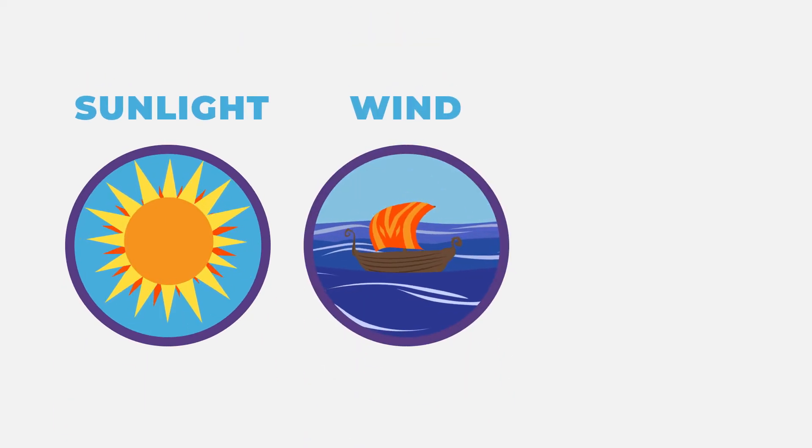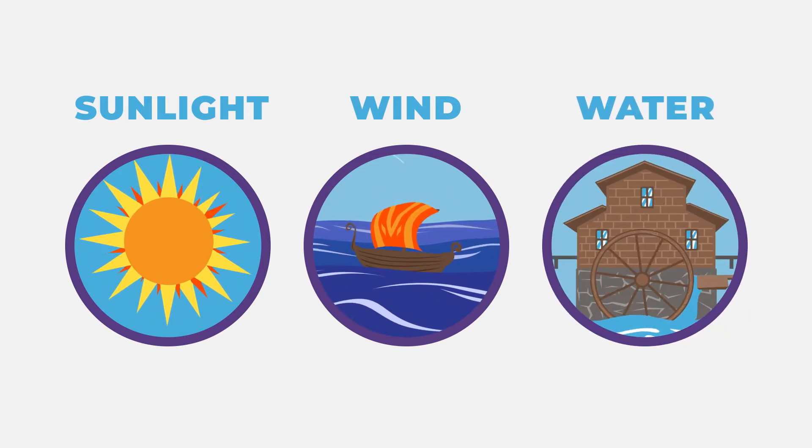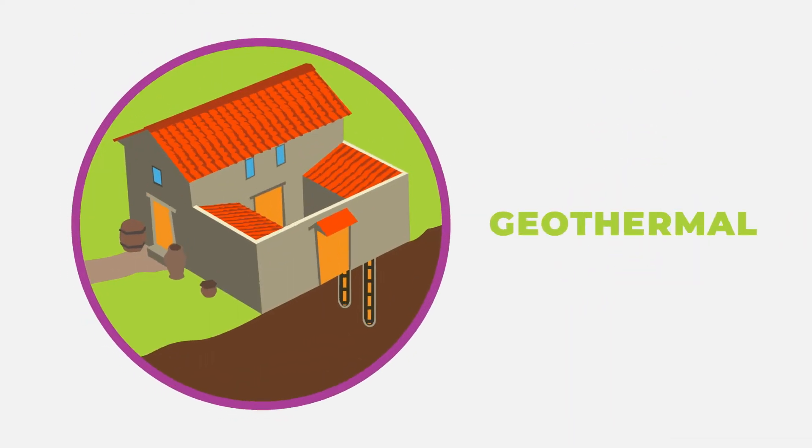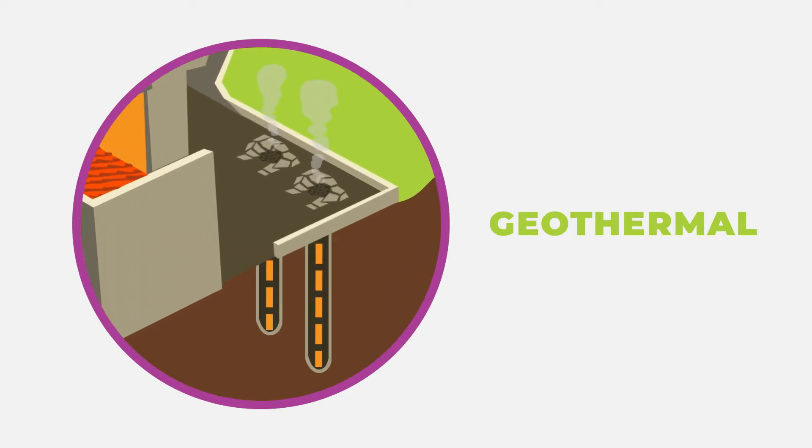Wind to move boats across the oceans, and flowing water to power water wheels to cut wood or mill corn. Ancient Greeks even warmed their homes with geothermal energy, heat coming from the very deepest parts of the Earth.